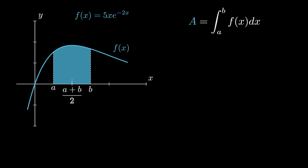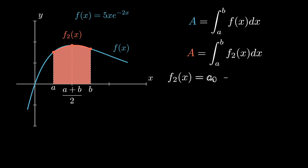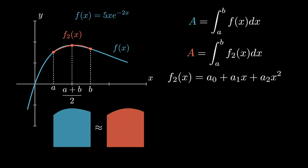So we will consider a function f̃ which passes through three points: (a, f(a)), (a+b/2, f((a+b)/2)), and (b, f(b)). The area under f̃ is the integration from a to b of f̃. Let's take the equation of f̃ as a0 + a1·x + a2·x². The shape of f̃ resembles f, so the area under f̃ is approximately equal to the area under f. Thus the area can be written as the integral from a to b of (a0 + a1·x + a2·x²) dx.